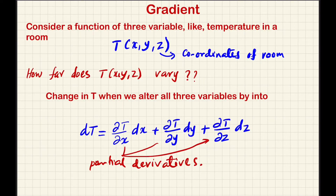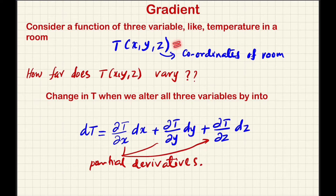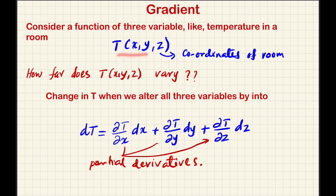Next we discuss the gradient of a scalar function. Suppose you take a scalar function — a function which returns a scalar value. The function depends on variables x, y, z. For each x, y, z value, the function returns a corresponding scalar value. This scalar value can represent various physical quantities. It can be the temperature inside a room, representing the temperature distribution, where x, y, z are the coordinates of a position in the room.